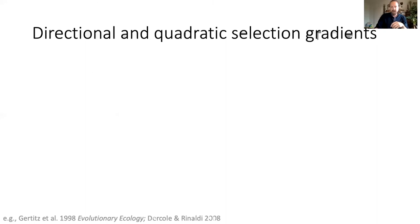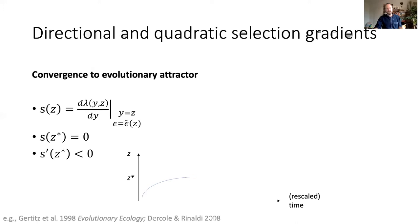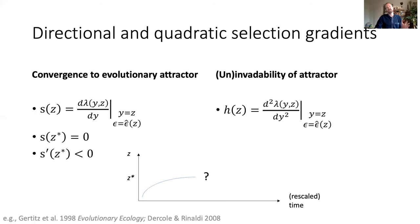This dynamical system allows investigation of two key properties of natural selection and its effect on evolution. First, the population evolves under directional selection via the substitution sequence, and the direction of evolution is given by the sign of the selection gradient S, which is the marginal change in invasion fitness. The population evolves until it reaches an equilibrium — a value z* — such that the selection gradient vanishes and its derivative is negative.